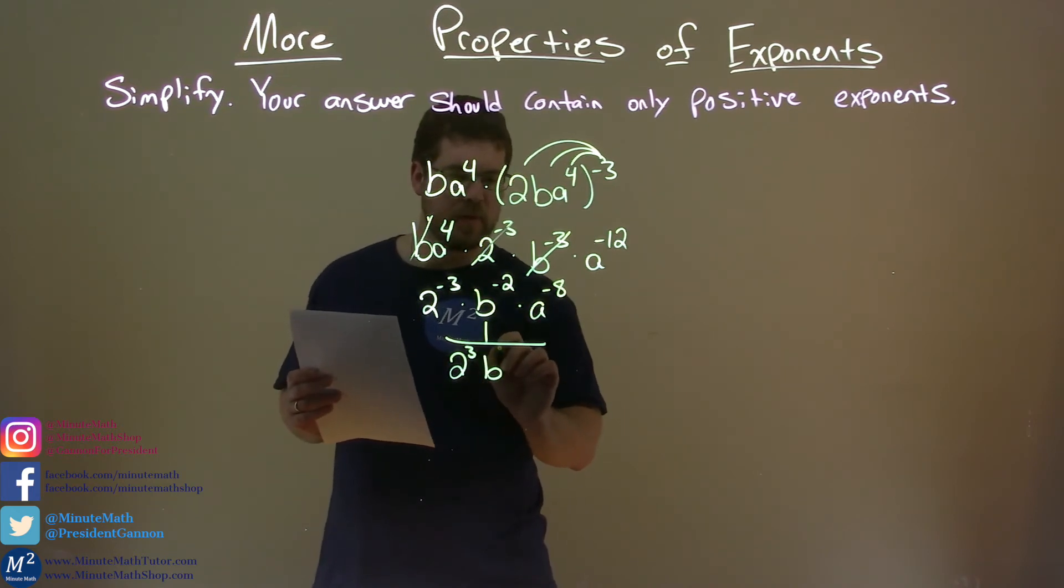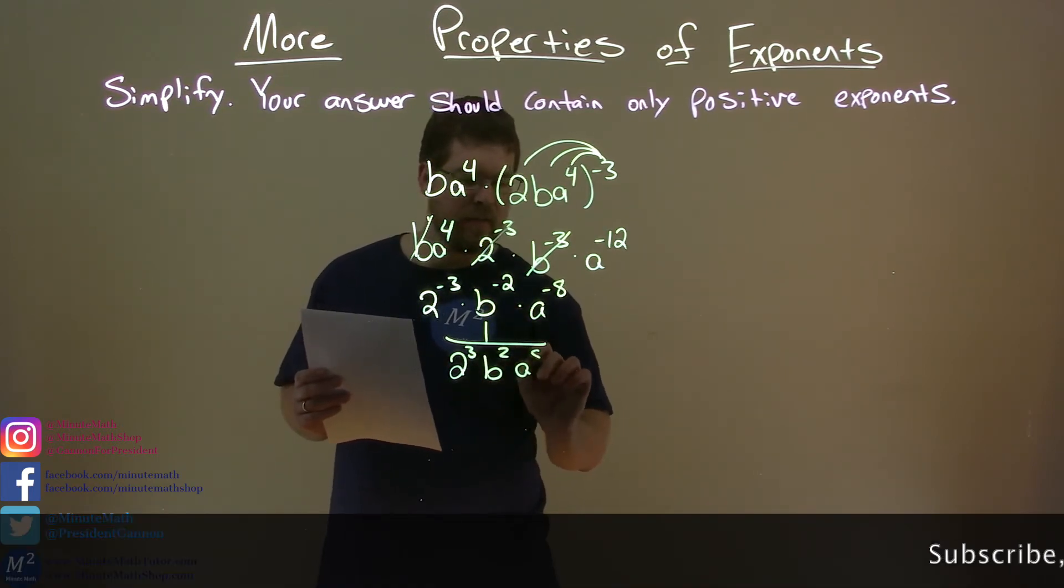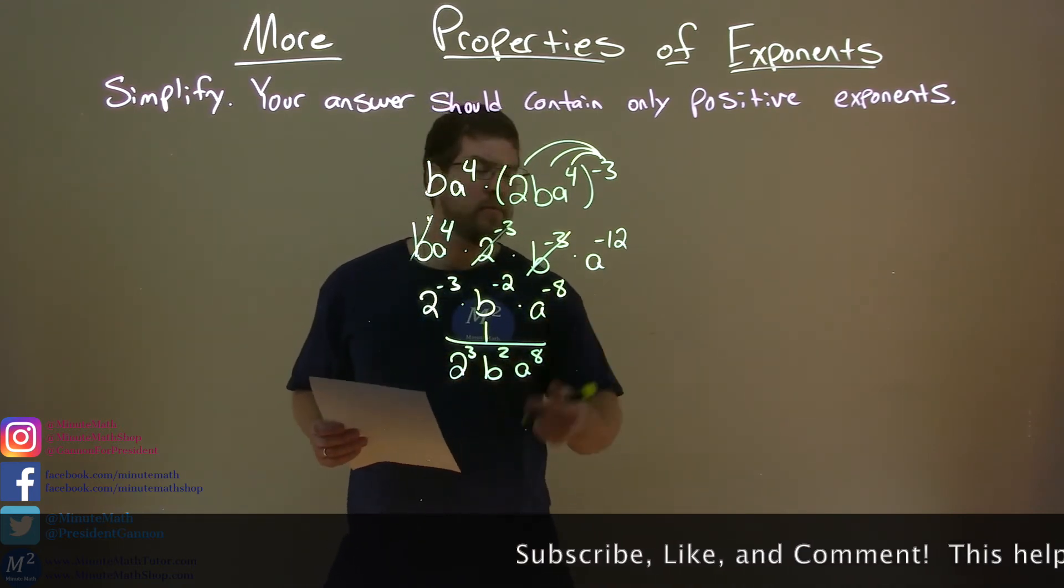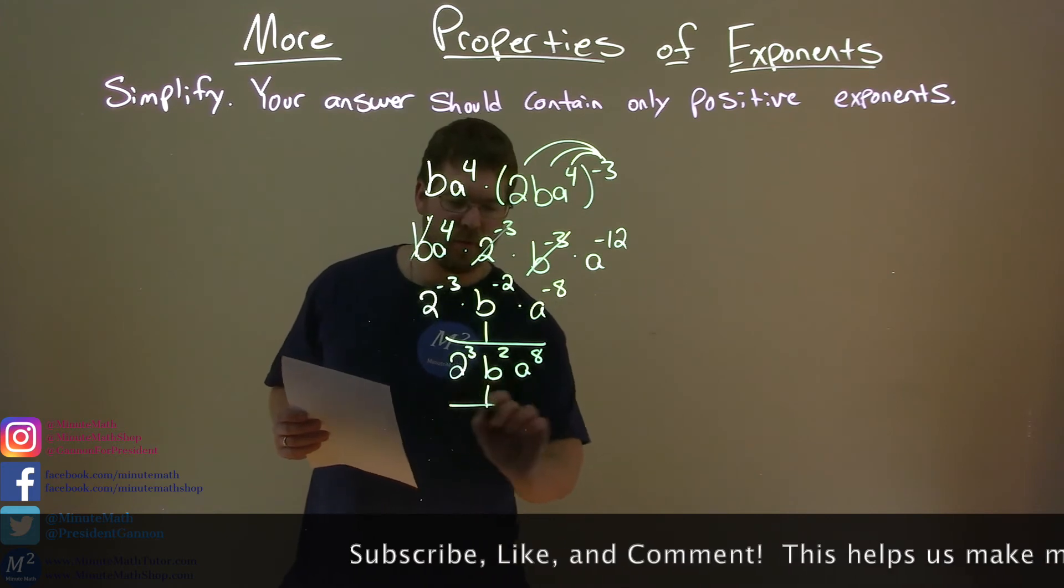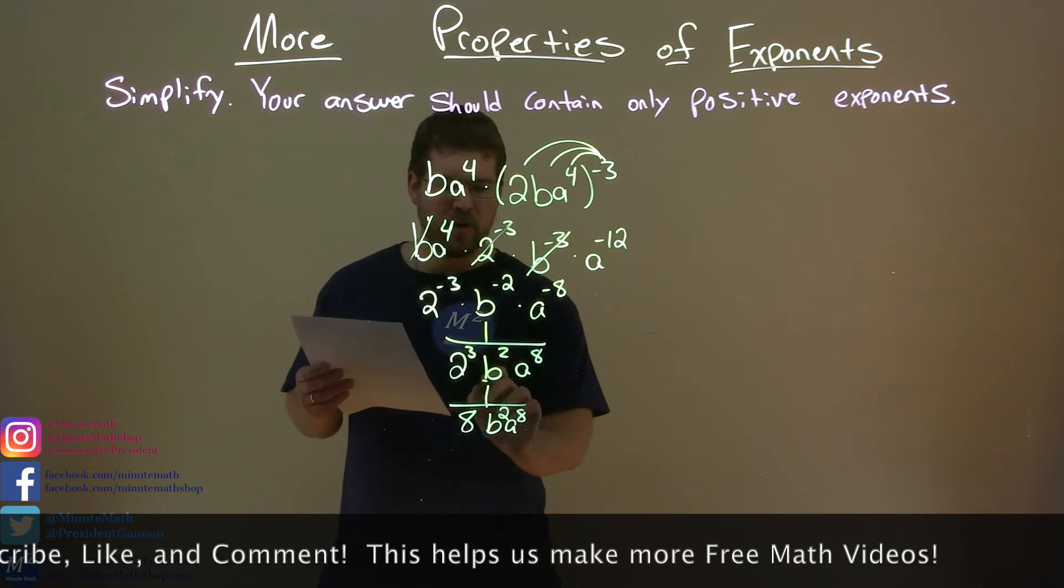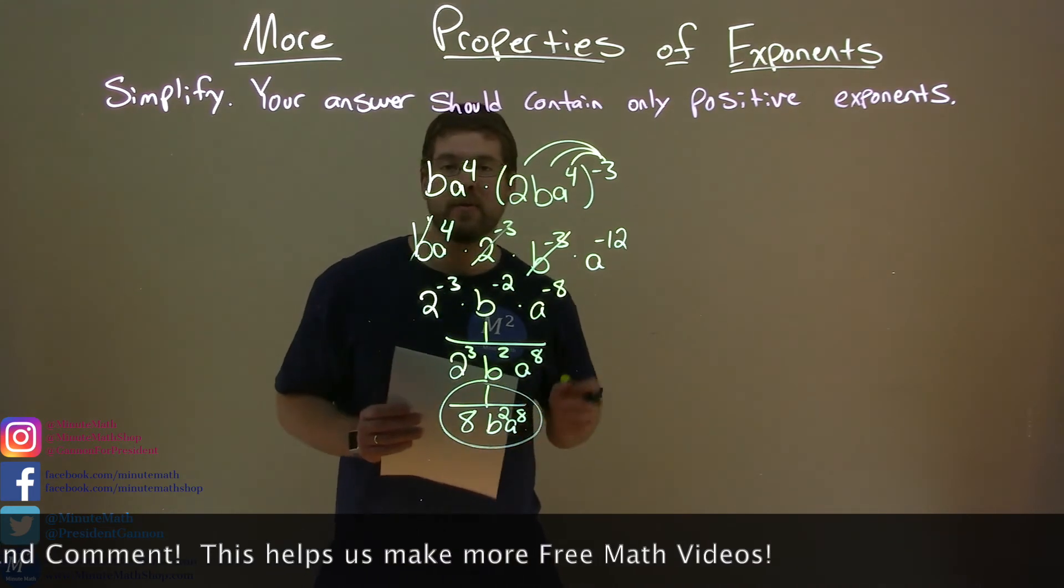So, 2 to the third, B squared, and A to the eighth power, all underneath 1. Well, 2 to the third, we know what that is. 2 times 2 is 4 times 2 is 8. So we have 1 over 8 B squared A to the eighth power, and now we're done. That is our final answer.